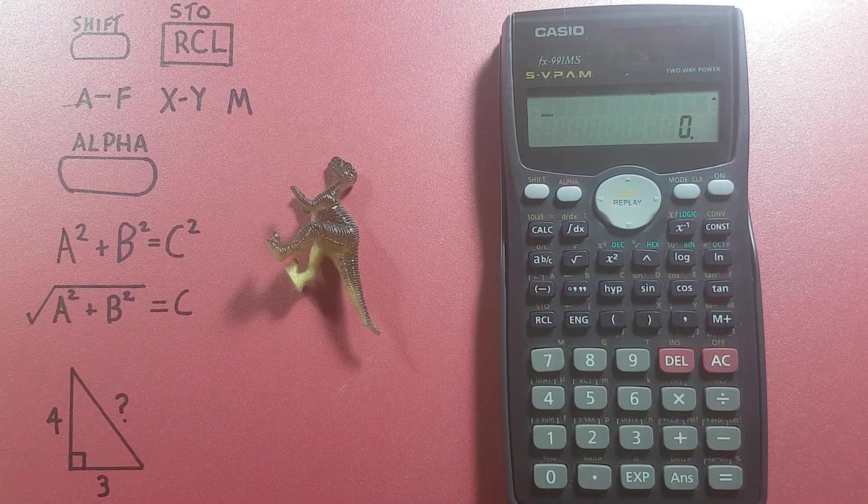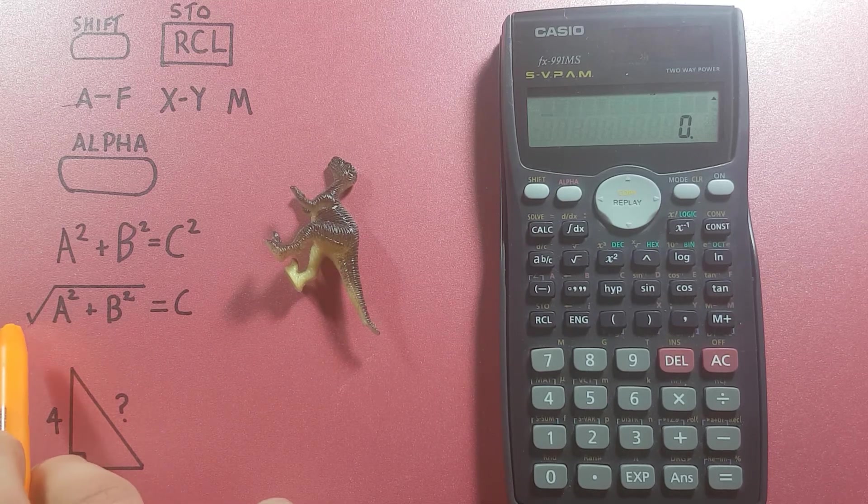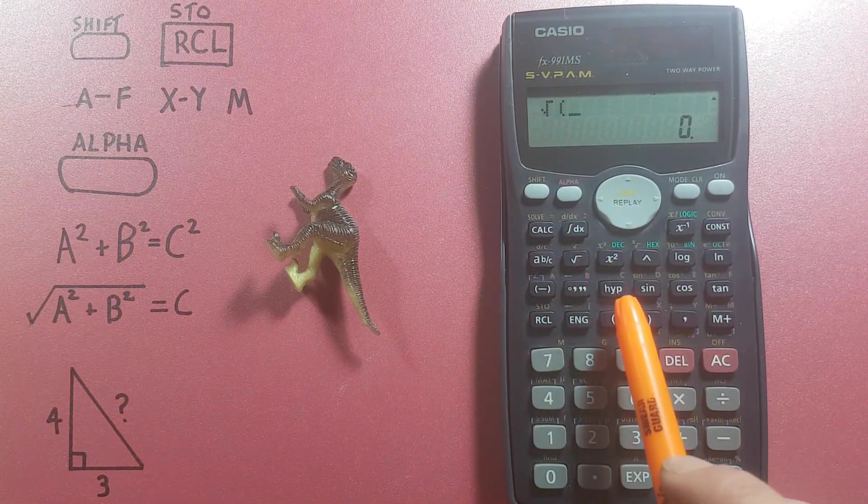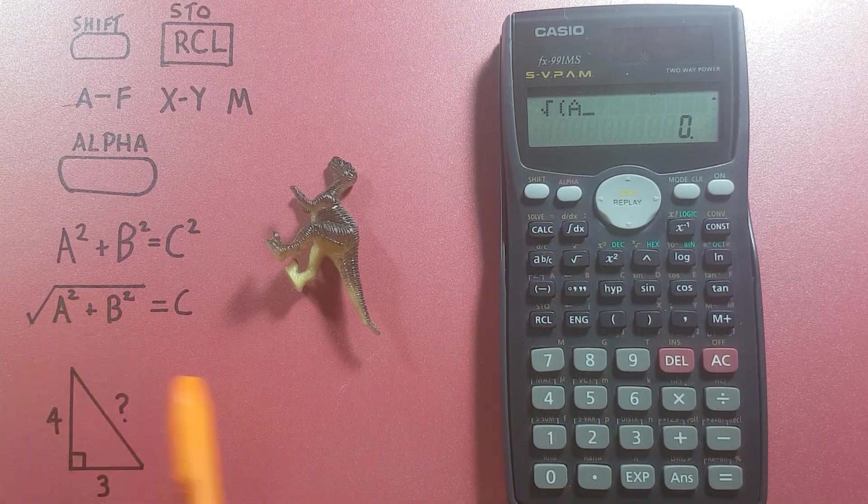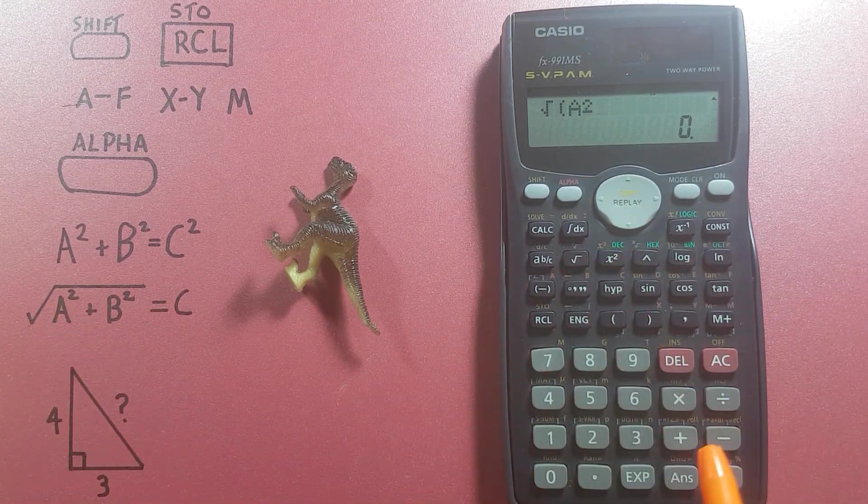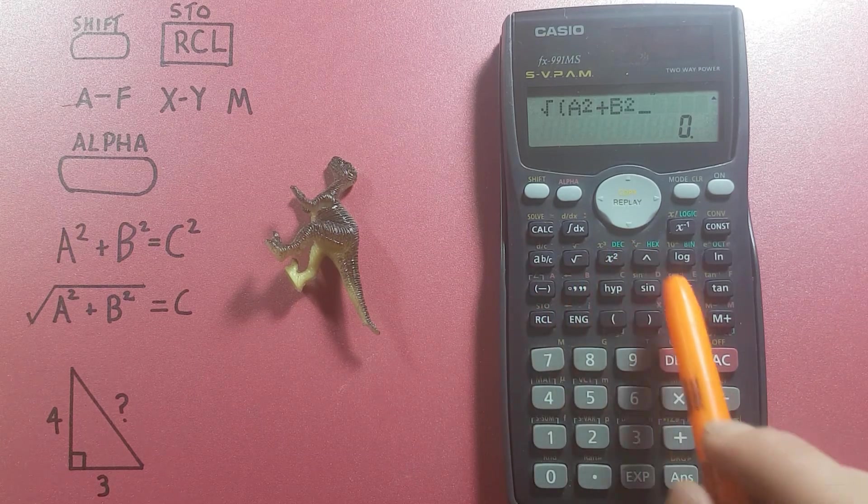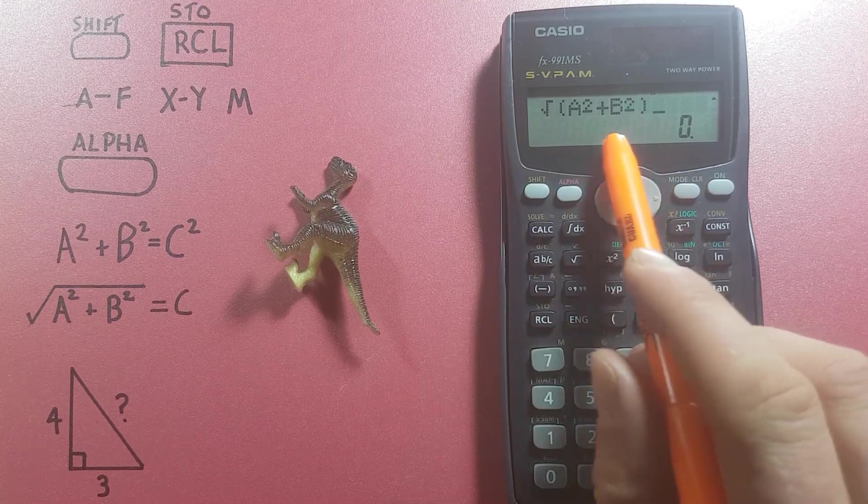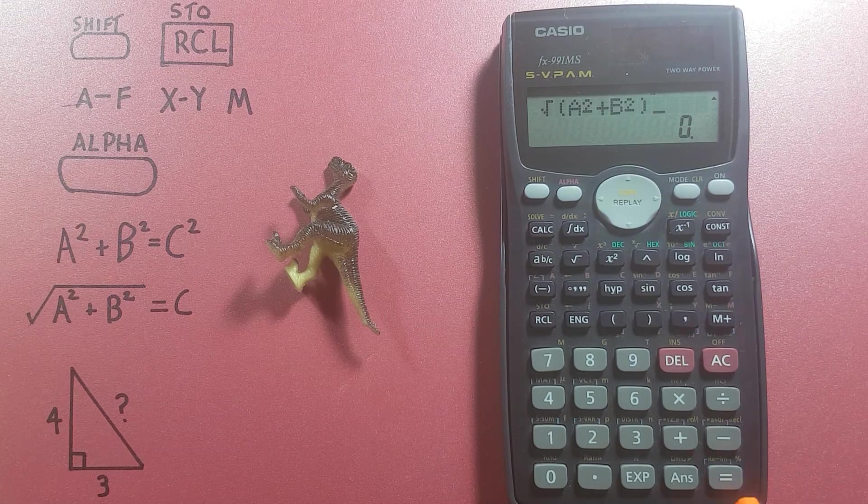All right now we can enter them into our formula. So since this is what we want to use, we'll start with the square root, bracket, recall a, that's our a, square root, plus recall b, square root, close bracket. There we go, remember a is 4 and 3 is our b, and we press equals, which gives us 5.